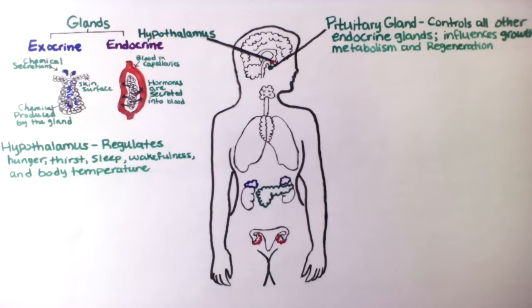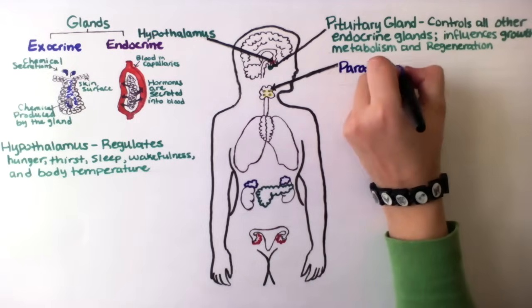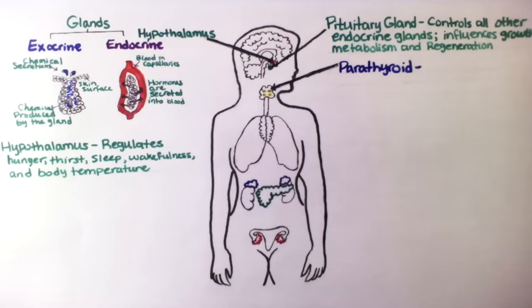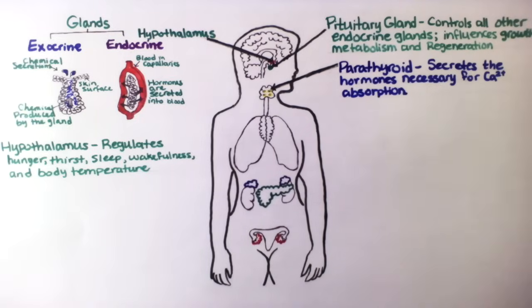The parathyroid glands — there are four of them and they are located behind the thyroid. They secrete the hormones necessary for calcium reabsorption. The parathyroid glands secrete PTH, parathyroid hormone, which controls the amount of calcium in the blood and bones.